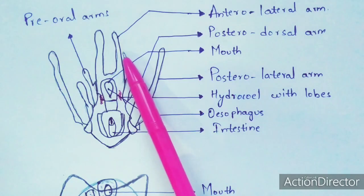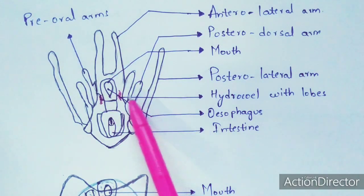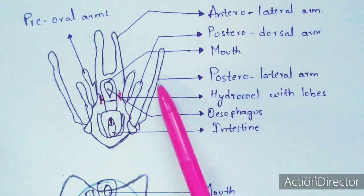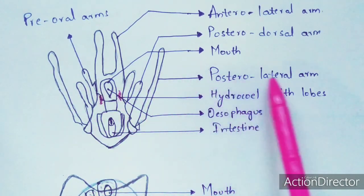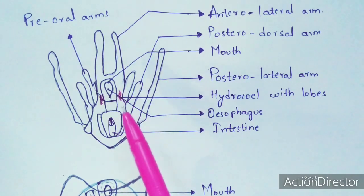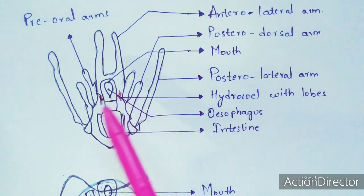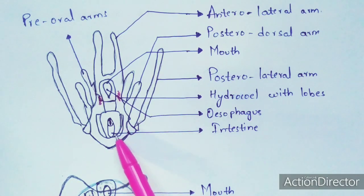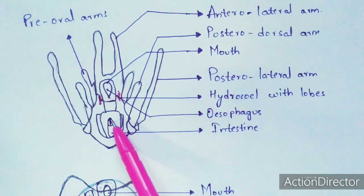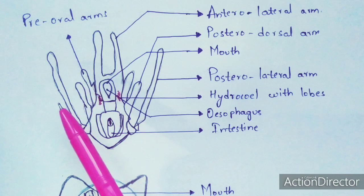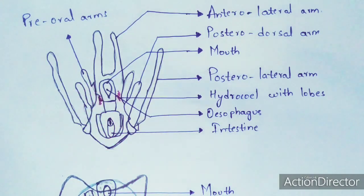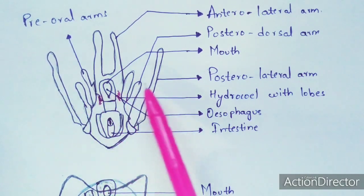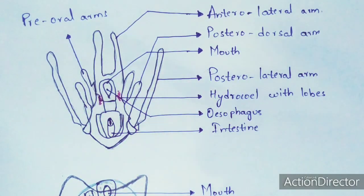In the diagram, these are the anterolateral arms, these are the posterior dorsal arms, this is the mouth, and these are the posterior lateral arms. The red-colored structures are the hydrocoel, which consists of lobes. This is the intestine, this is the anus, and these are the pre-oral arms — which are very much reduced. The posterior lateral arms are very long.